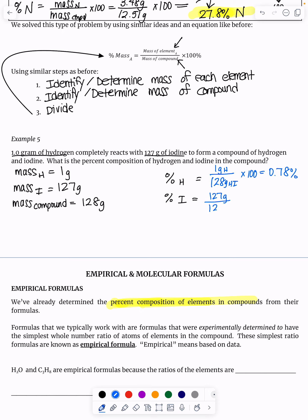And then if I do the percentage of iodine, it'd be 127 grams divided by the 128 grams in total times 100, and we get about 99.22%. So huge difference there.